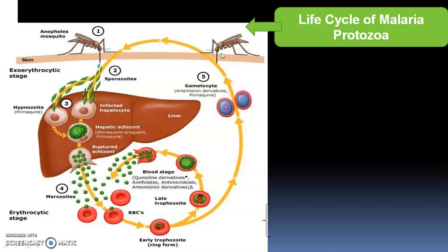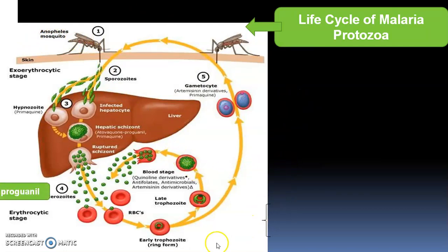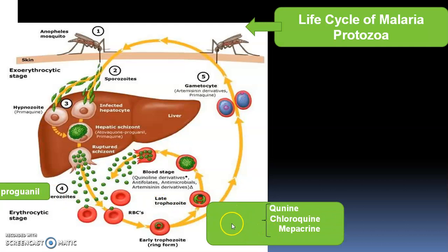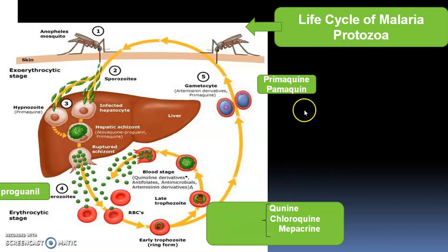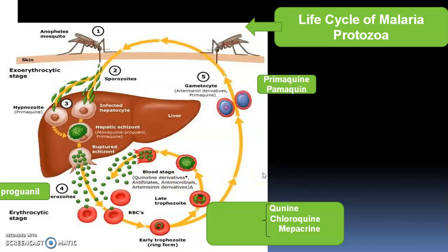Some schizonts travel with the RBCs, infect the blood, and form gametocytes. These gametocytes are taken up by another female Anopheles mosquito, which is responsible for transfer of malaria. Only the female Anopheles mosquito can transfer malaria. In the erythrocytic stage, proguanil is important. After that, quinine, chloroquine, and mepacrine are used as suppressive therapy. Primaquine or pamaquine are used when gametocytes are formed in the blood.